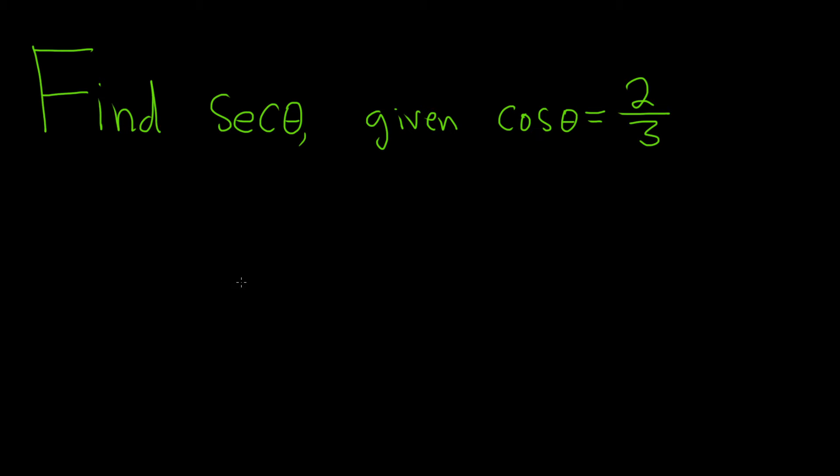In this problem we're being asked to find secant of theta given that the cosine of theta is 2 over 3. A really easy way to do this is to just realize that the secant of theta is the reciprocal of cosine. So all you have to do is flip it, so the answer is 3 over 2.